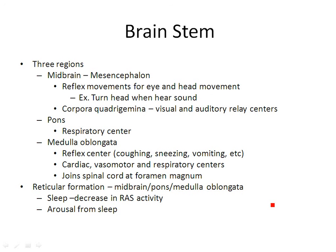The brain stem has three regions: the midbrain, also called the mesencephalon; the pons; and the medulla oblongata. The midbrain deals with reflexes — in lab you'll see the corpora quadrigemina, the four twin bodies, which serve as visual and auditory relay centers and control reflex movements. You turn your head when you hear a sound — that's a reflex to auditory stimulus. The pons is primarily a respiratory center. The medulla oblongata is a reflex center for coughing, sneezing, vomiting, and also plays a role in cardiovascular, vasomotor, and respiratory centers.